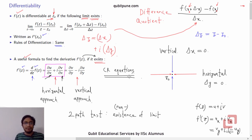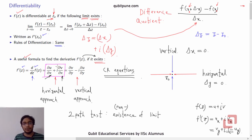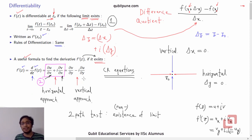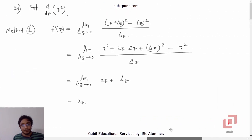It is important to understand what differentiability means for functions of a single complex variable — it again means existence of the limit of the difference quotient. We also have the same rules of differentiation but a useful formula to find the derivative. Let us now solve a problem by first principles to find the derivative of z²; we know that d/dz(z²) should be 2z. Method 1: introduce a change Δz in z, so f'(z) = limit as Δz → 0 of [f(z + Δz) − f(z)] / Δz.